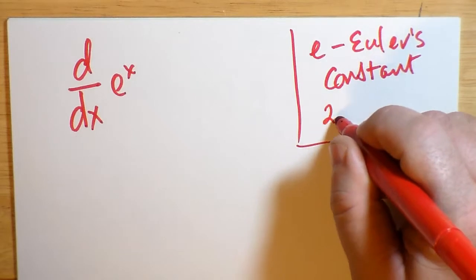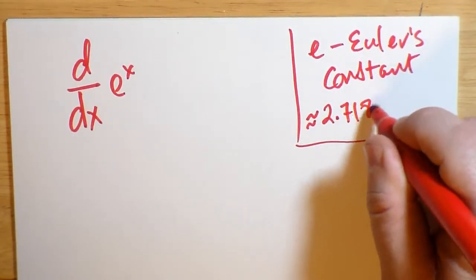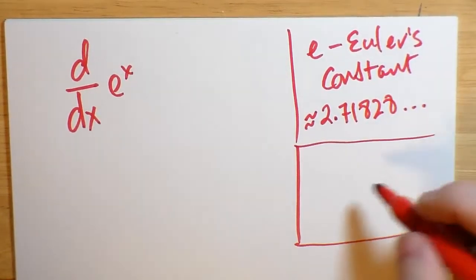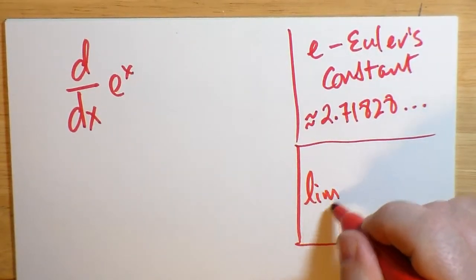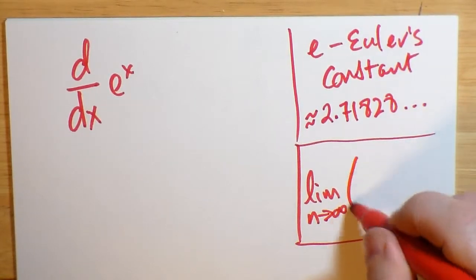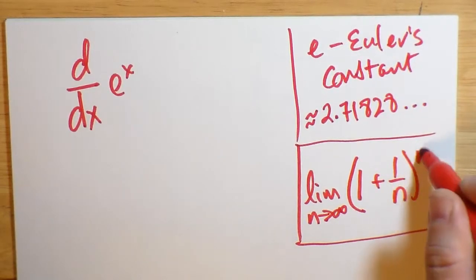Basically, Euler's constant is approximately 2.71828, and so on. And so it comes from the limit as n approaches infinity of the quantity 1 plus 1 over n to the power of n.